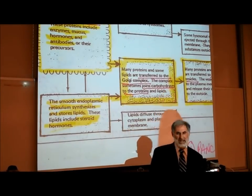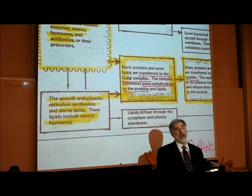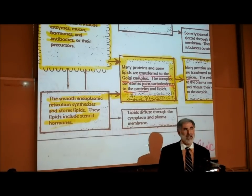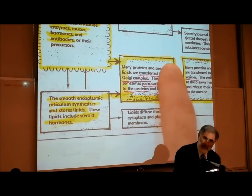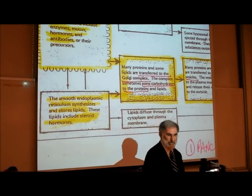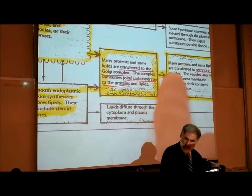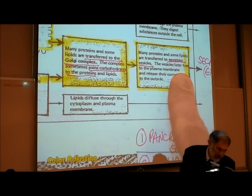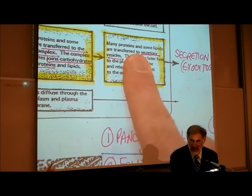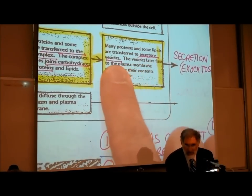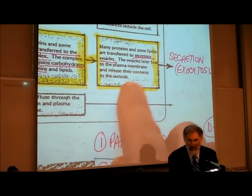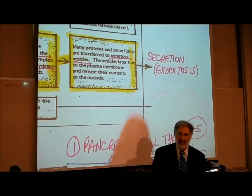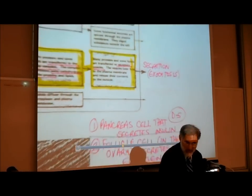If you join a carbohydrate — a sugar — to a protein, that's called a glycoprotein. Recognition sites are glycoproteins, for example. The flat pancake-like sacks of the Golgi complex not only store chemicals, they can modify them as well. What may happen next is that proteins or lipids can be transferred to secretory vesicles, and these vesicles can fuse to the plasma membrane and release their contents to the outside of the cell — secretion or exocytosis.